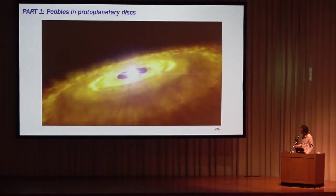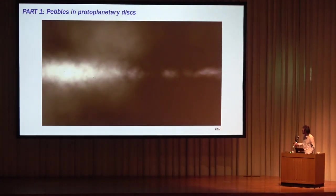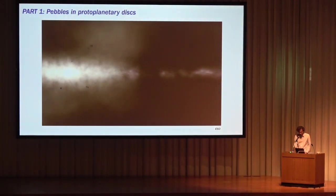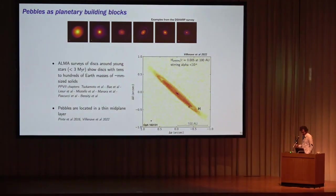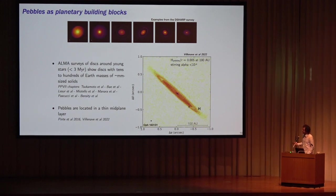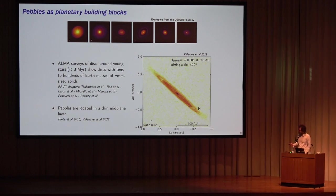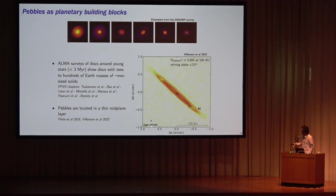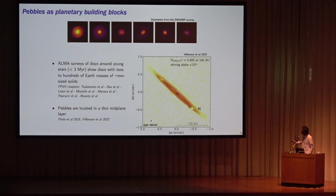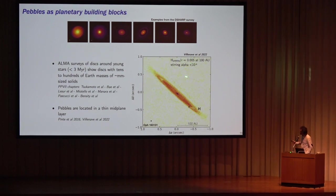Starting from the start: these young disks of gas around stars with small particles in them. ALMA revolutionized the field. We know now that basically all disks start out with tens to hundreds of Earth masses of millimeter-sized solids. In disks where we can measure it, they are typically found to be in a very thin mid-plane layer. Looking at the aspect ratio H over R, you find it's 0.005 — literally as flat as a pancake — corresponding to stirring alpha smaller than or comparable to 10^-4.